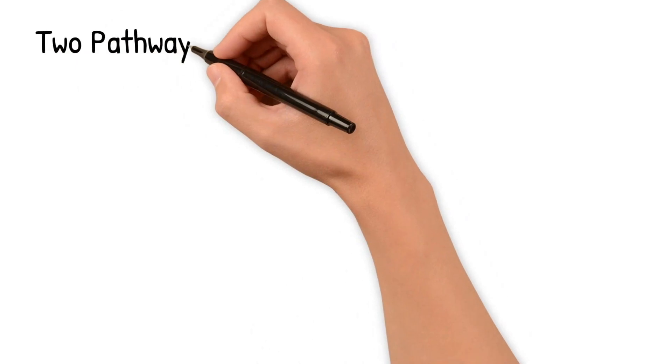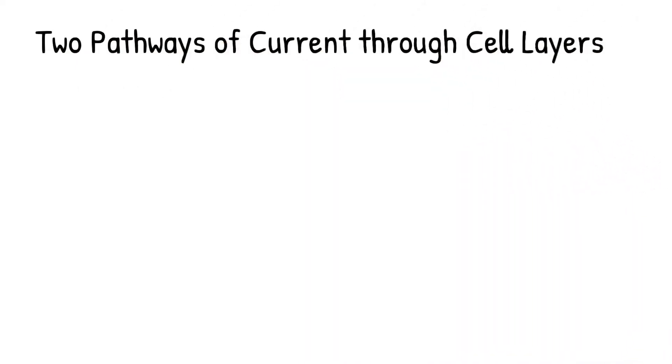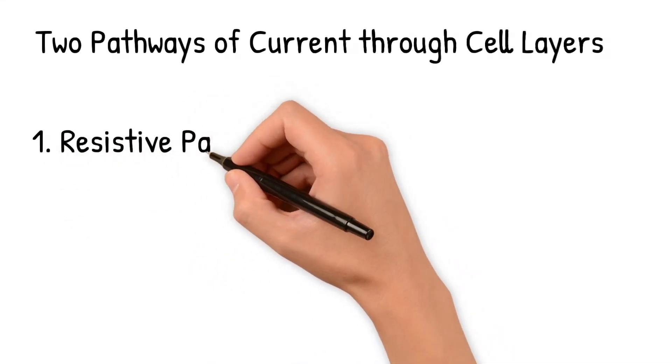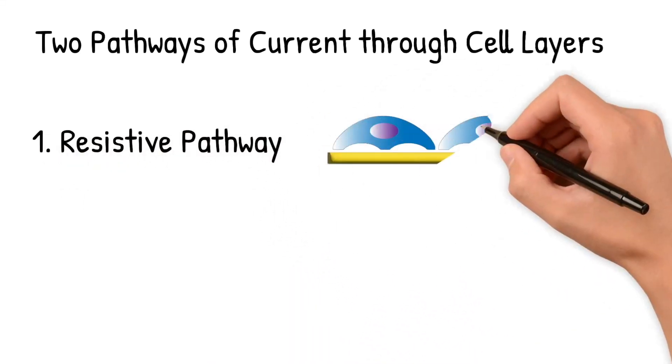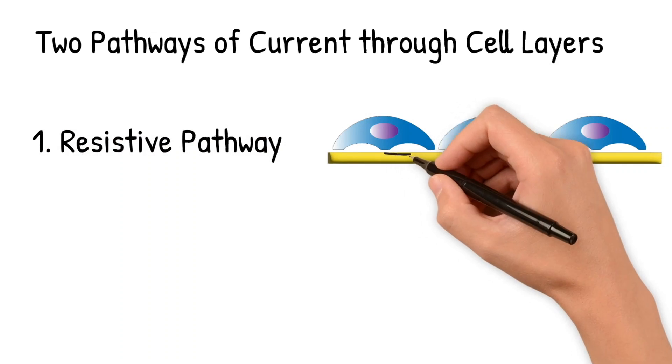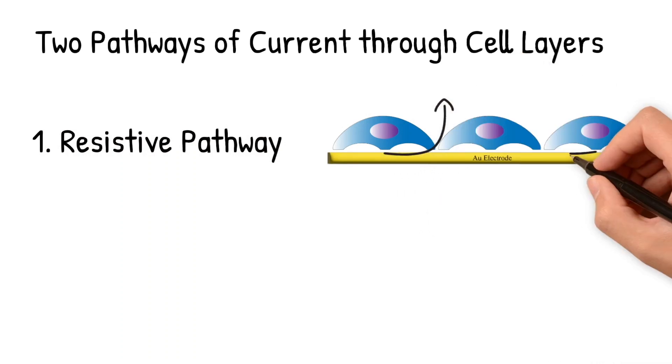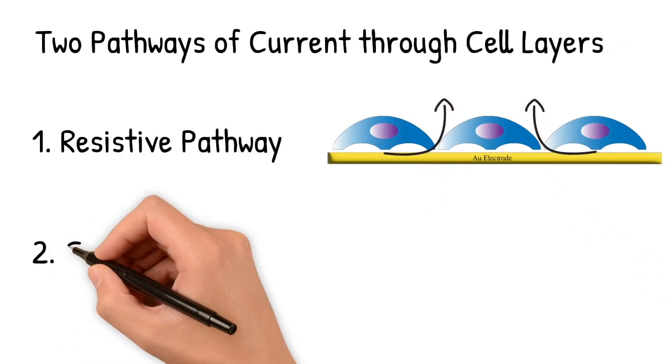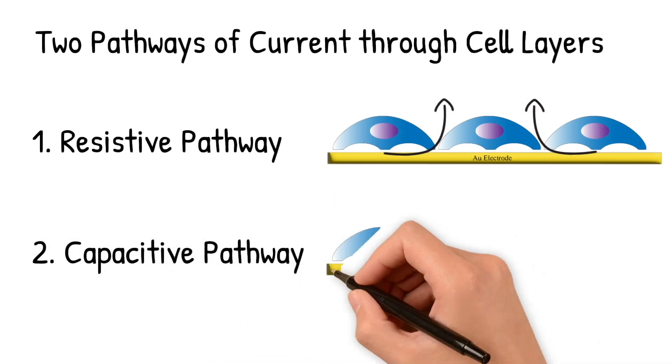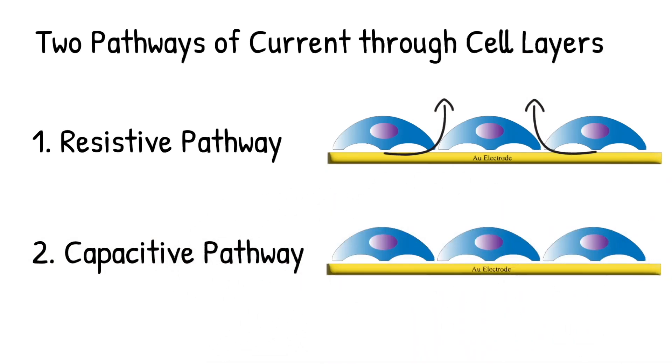There are two pathways through cell layers that the alternating current can travel through that cause the impedance. The first is the resistive pathway, which has the current going around the periphery of the cell and through the cell-to-cell junctions. The second is the capacitive pathway, which has the current capacitively passing through the cells themselves.